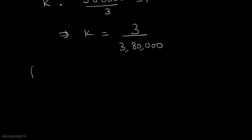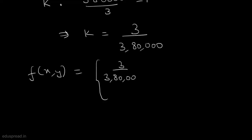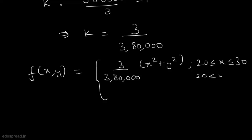After substituting the value of k into the joint probability density function, we get f(x, y) = (3/380000)(x² + y²) for values of x between 20 and 30 and values of y between 20 and 30, and equal to 0 otherwise.